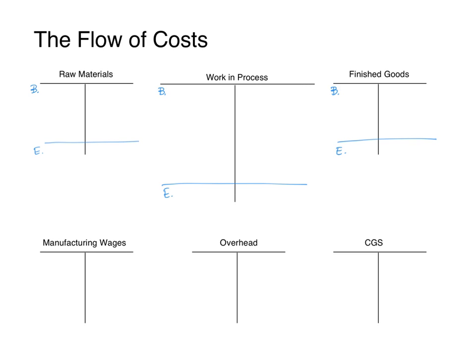Let's begin with raw materials. The materials account is going to increase if we make a purchase of materials, and that will increase with a debit. Once we requisition materials into process, we call these used materials. If they're direct materials — for example, the wood used in the production of a wooden chair — they go directly into work in process. If it is an indirect material such as glue or screws, that is not traced directly to the product but allocated, and it moves down into overhead as an indirect material.